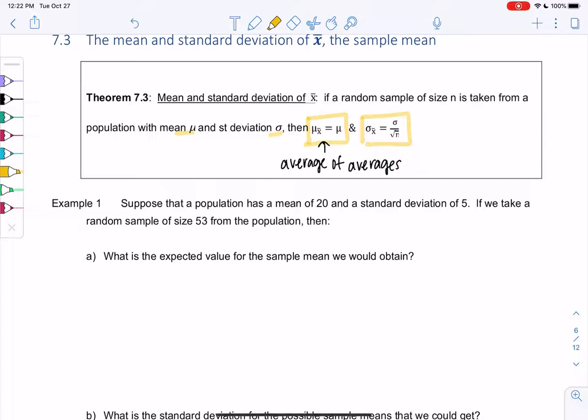So sigma x-bar will be sigma over the square root of n. This is the standard deviation of the sample means, not the original data. And it has less variation. If we think about taking an average, the averages are going to be closer together than the original data. So the means have a smaller standard deviation. There's less spread.